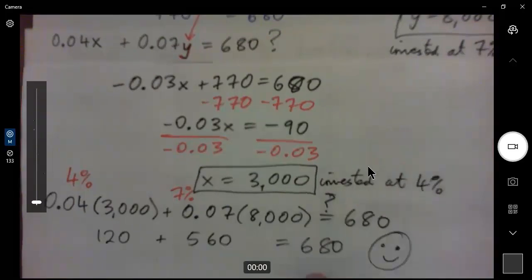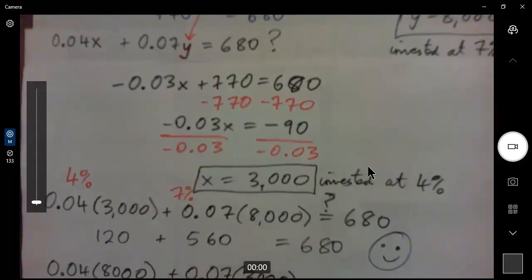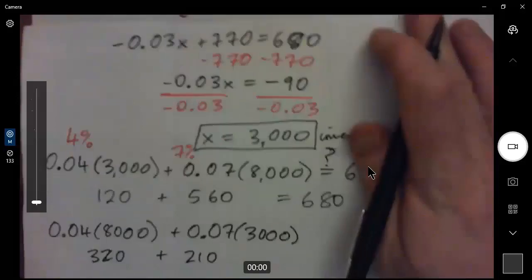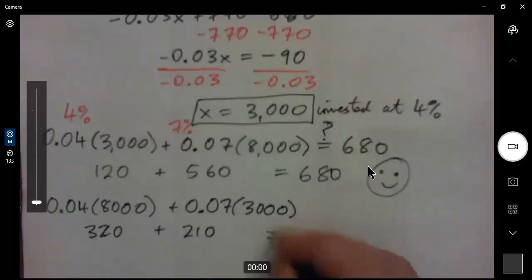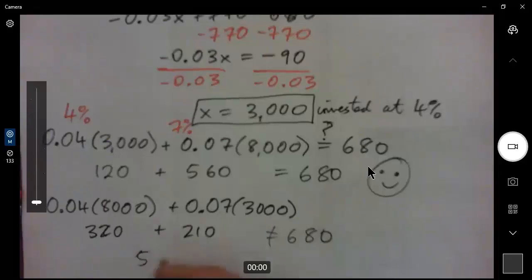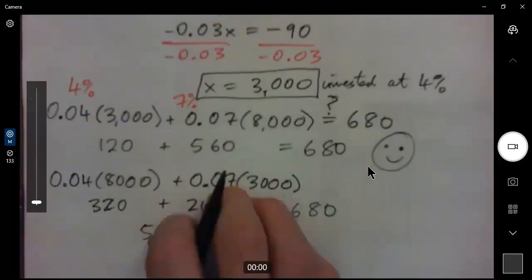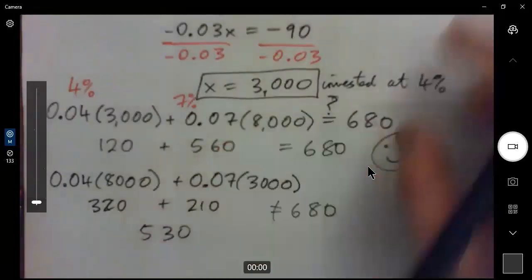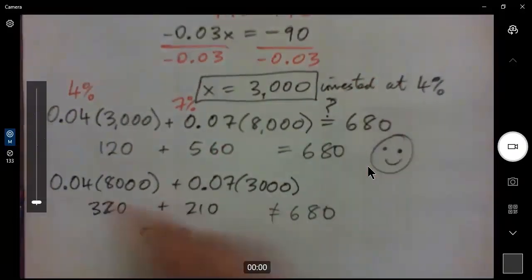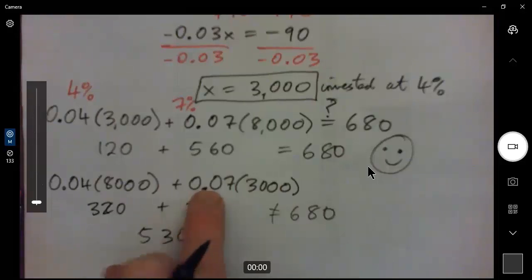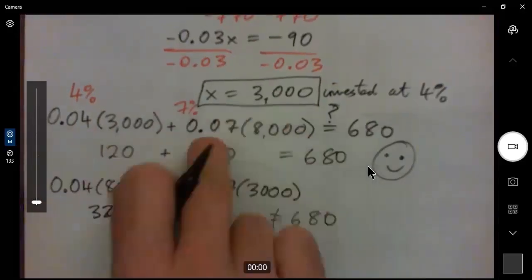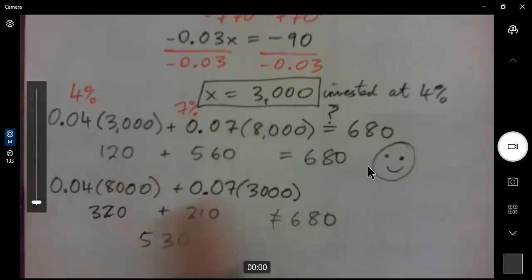Yeah. You can't switch it around. Watch this. 0.04 X 8,000 plus 0.07 X 3,000 is not going to work. Because this is $320 and this is $210. And if you add those together, you don't get 680. If you add those together, you get 530. So, you guys have to specify how much money is invested at what rate. You can't just switch them around like that. And that's what a lot of students mess up at the end. They say, oh, it was $8,000 at 4% and $3,000 at 7%. No. It's $3,000 at 4% and $8,000 at 7%. Not the same thing. It gives you different interest rates in different accounts, right?